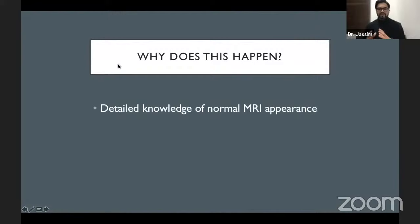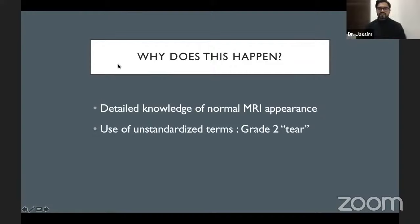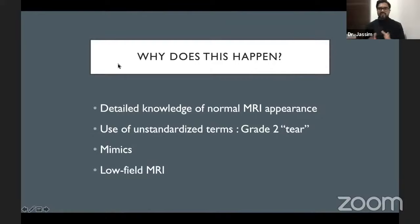This happens because you need detailed knowledge of the normal MRI appearances of various structures of the knee. There is also the problem of using unstandardized terms — some radiologists use 'grade 2 tear' when grade 2 is not necessarily a tear. There are certain mimics of tears that we must know to avoid erroneously interpreting normal appearances as abnormalities.